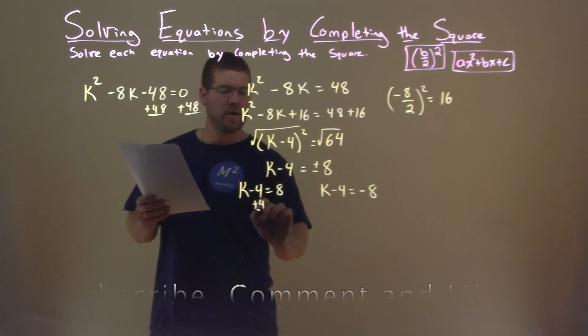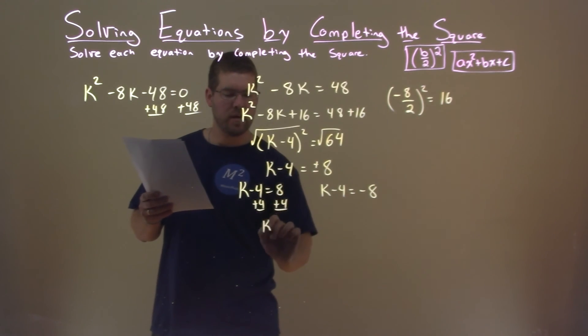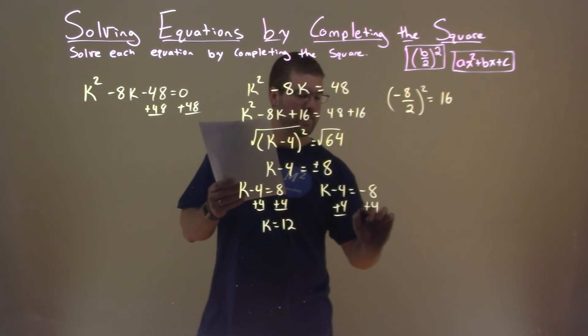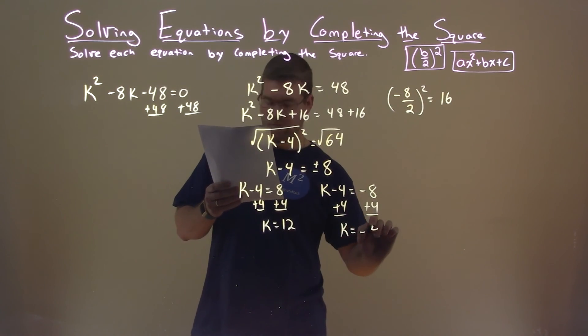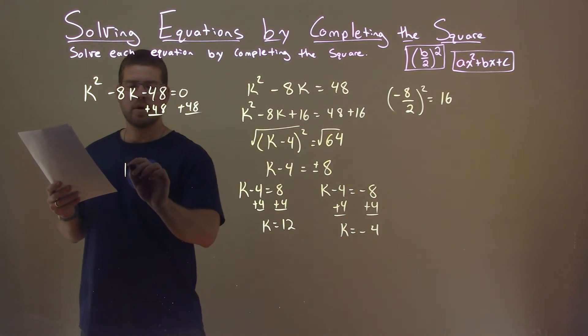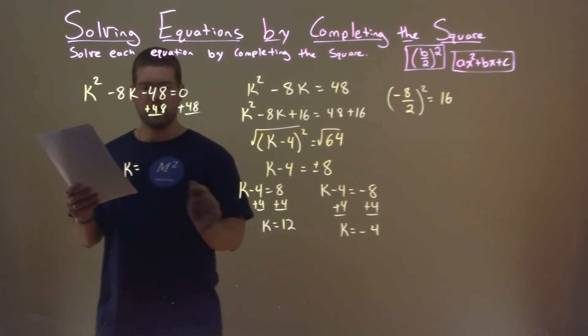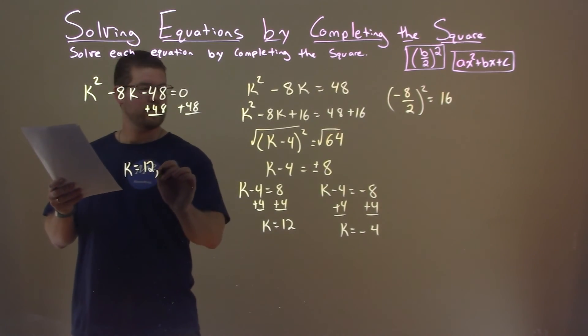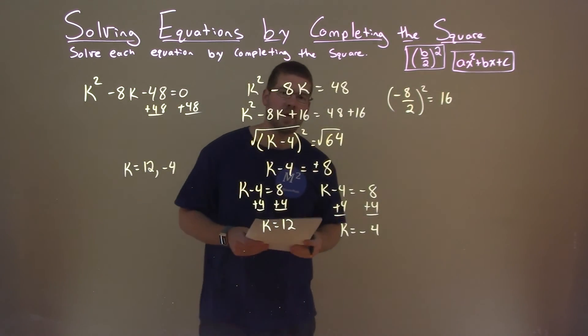We add 4 to both sides and we have k = 12, and add 4 to both sides here and k = -4. So we can write this as one statement: k = 12 and -4, and that is our final answer.